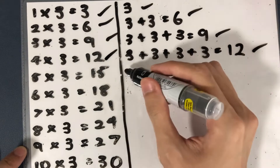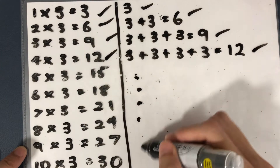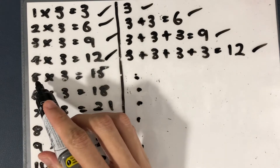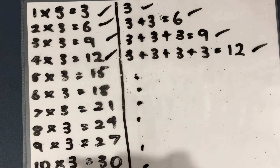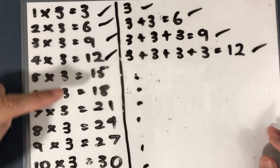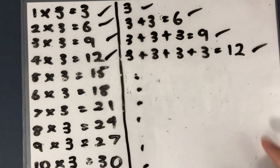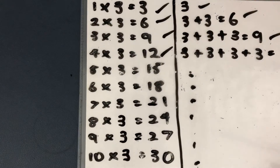If you do it for this and this and this and this, it's all the same. So this will be 5 threes, 6 threes, 7 threes, 8 threes, 9 threes, and 10 threes. This is just the shorter and faster way of repeated addition, which is also known as multiplication.